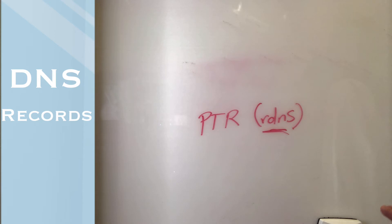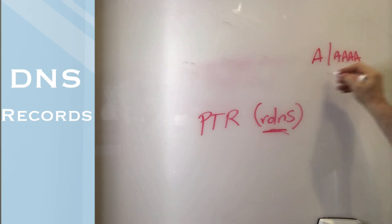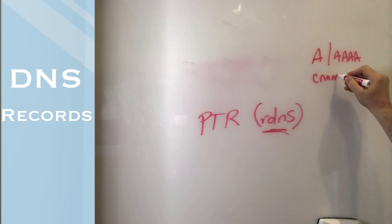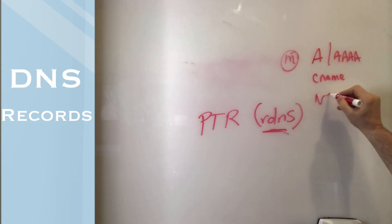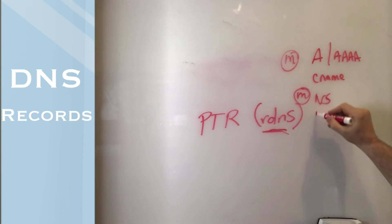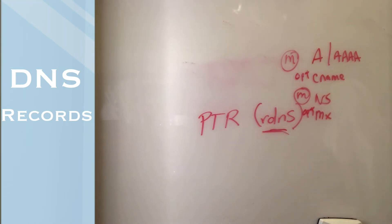As a contrast: the PTR record is optional — many websites don't fill it out. A and Quad A records absolutely have to be filled in, one or both of them. The CNAME is optional but normally seen. The NS record is mandatory — you have to have it. The MX record is optional. So some things are not optional, some things are. A records and the name server must be filled in, but RDNS, CNAME, and mail exchange are not mandatory at all.